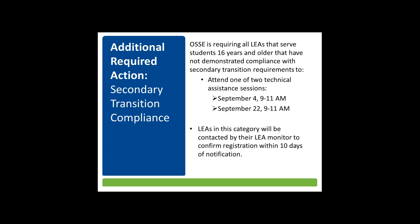Additionally, regarding secondary transition, in the determinations email you received on August 6th, there was information about secondary transition technical assistance with a registration link provided. Please register for one of the two sessions: September 4th from 9 to 11, or September 22nd from 9 to 11. This is for all LEAs that serve students 16 years and older that have not demonstrated compliance around secondary transition. We are committed to improving our secondary transition compliance rates and need your help. If you serve this population and have not demonstrated compliance in this area, you must sign up for one of these sessions.